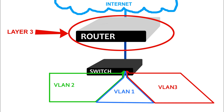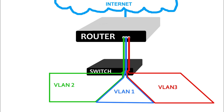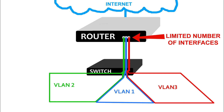Your router that connects out to the internet or to other external networks does have that capability of routing between VLANs because it's a Layer 3 device. So technically, if you only have 1, 2, or 3 VLANs, you can create a network cable connection from the switch to the router for each of those VLANs, create a routable interface on each connection on the router, and have the router handle that. But let's say you have a limited number of routable physical interfaces on your router and can't create one for each VLAN, or you may need each of those available interfaces for other network connections.